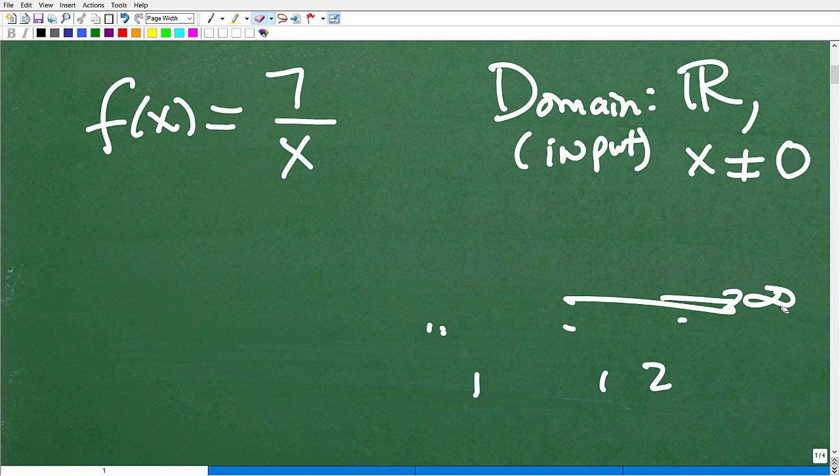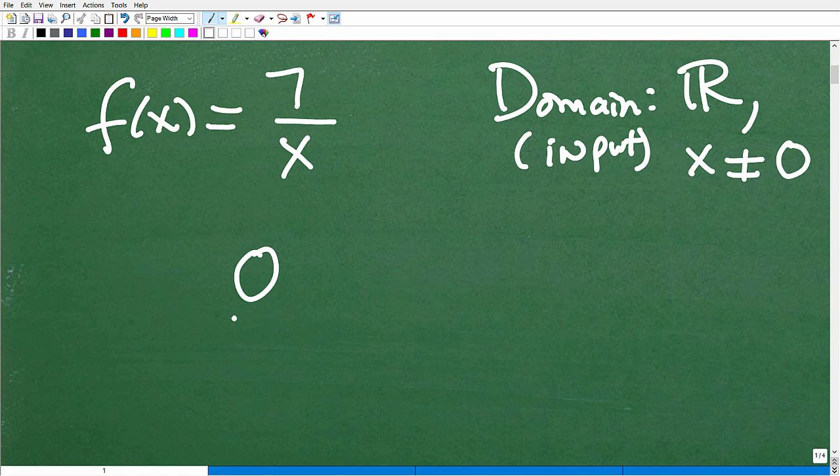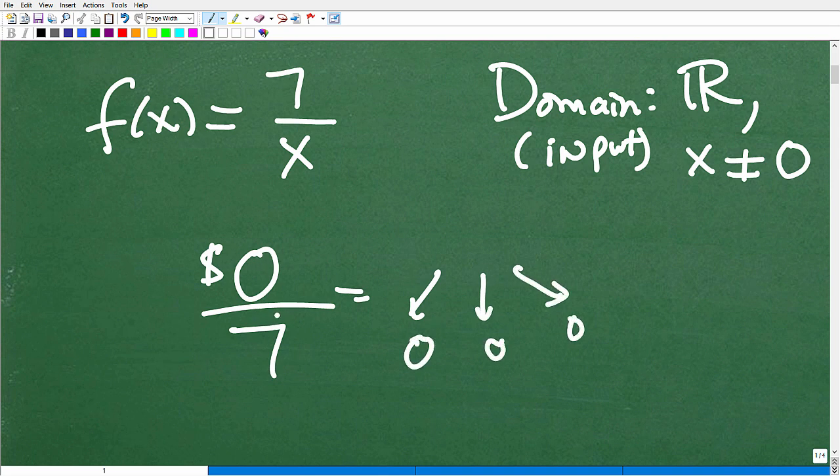So kind of think about it this way. So let's go back to our example 7 and 0. So let's say you and your 7 friends found $0, right? And you're like, oh wow, we found $0. Awesome. Let's split it up 7 ways. So you're going to take that $0 and you're going to split it up 7 ways. Each of you are going to get how much? You're going to get 0, right? So this 0 divided by 7 is going to be 0.